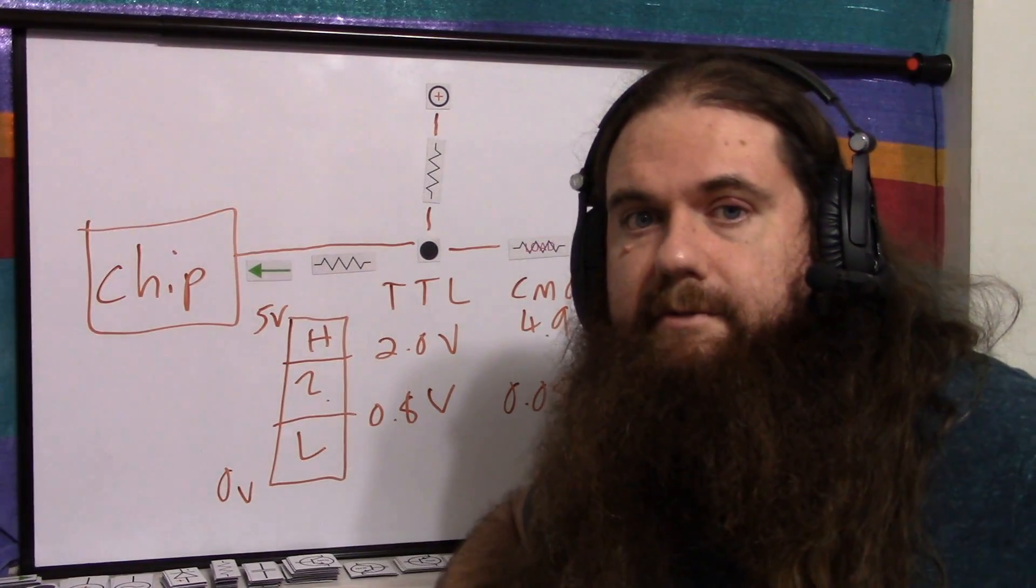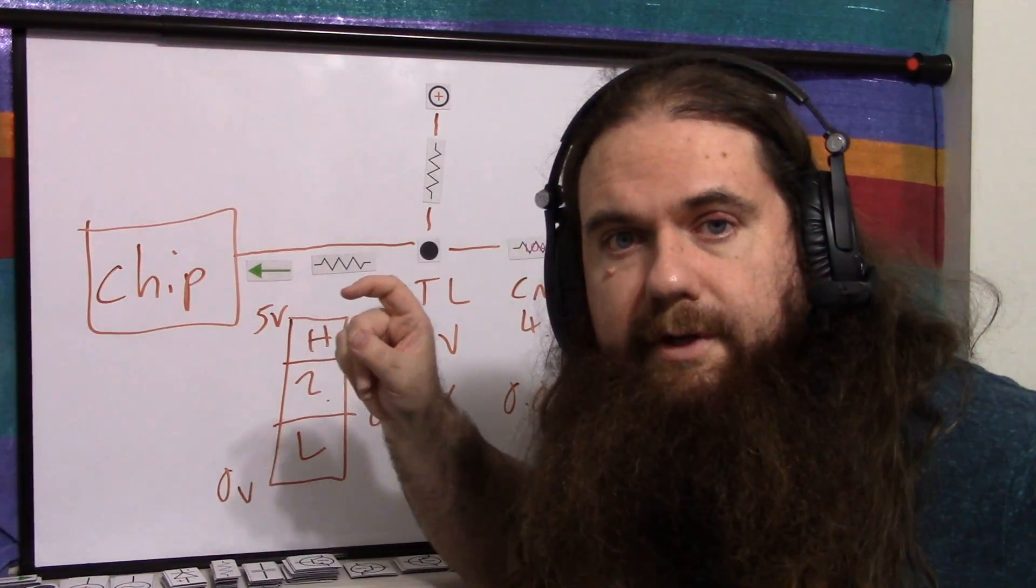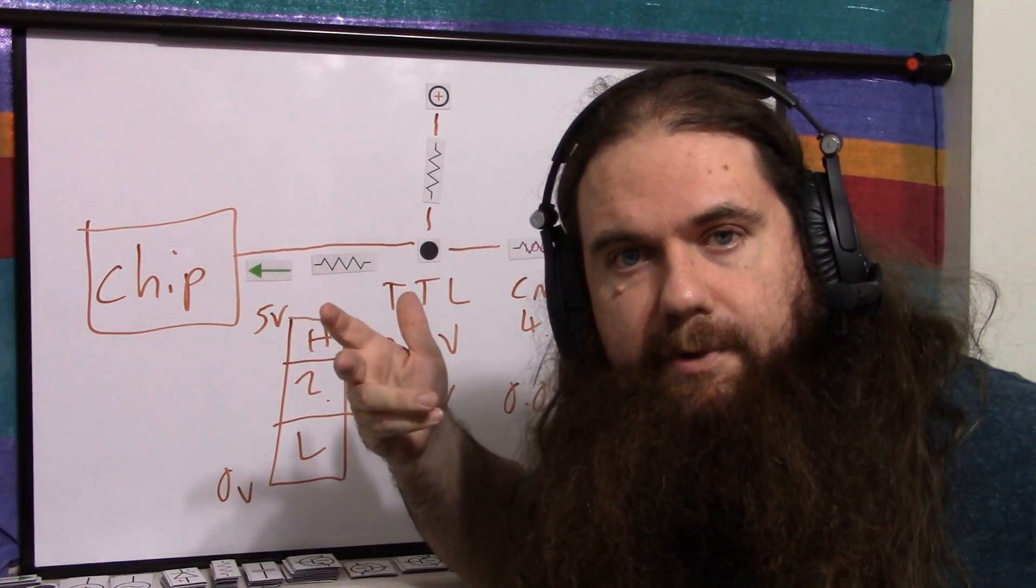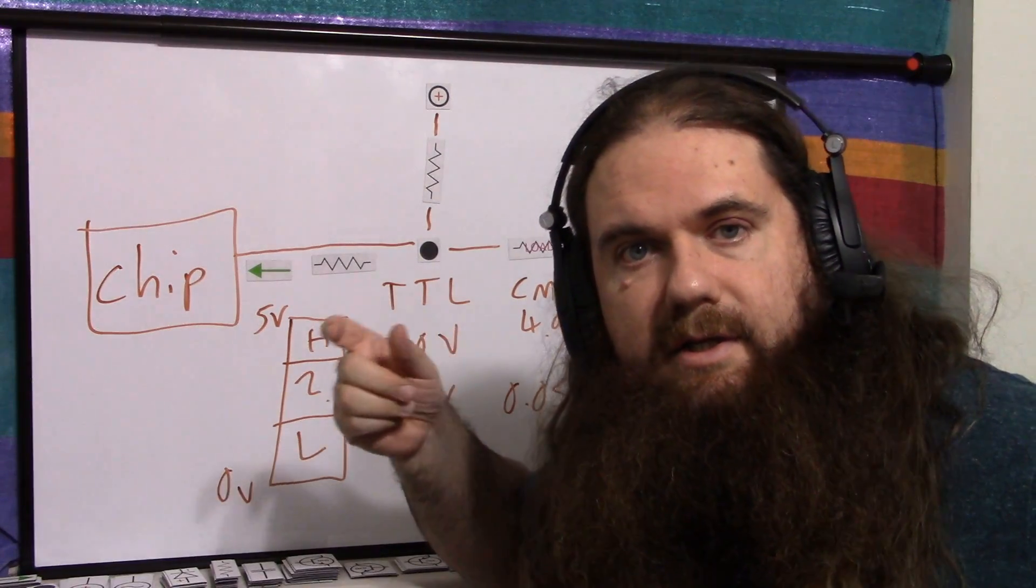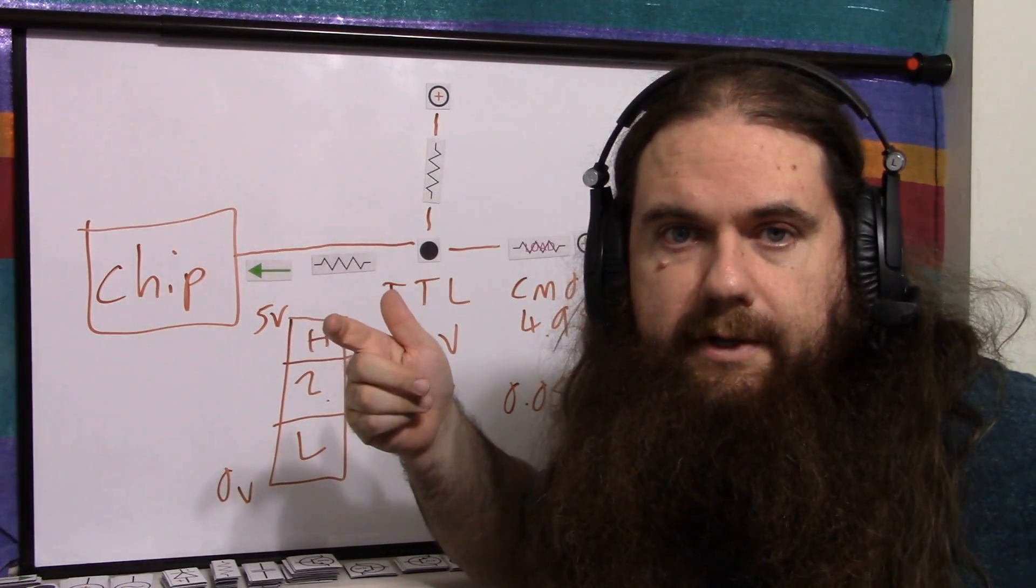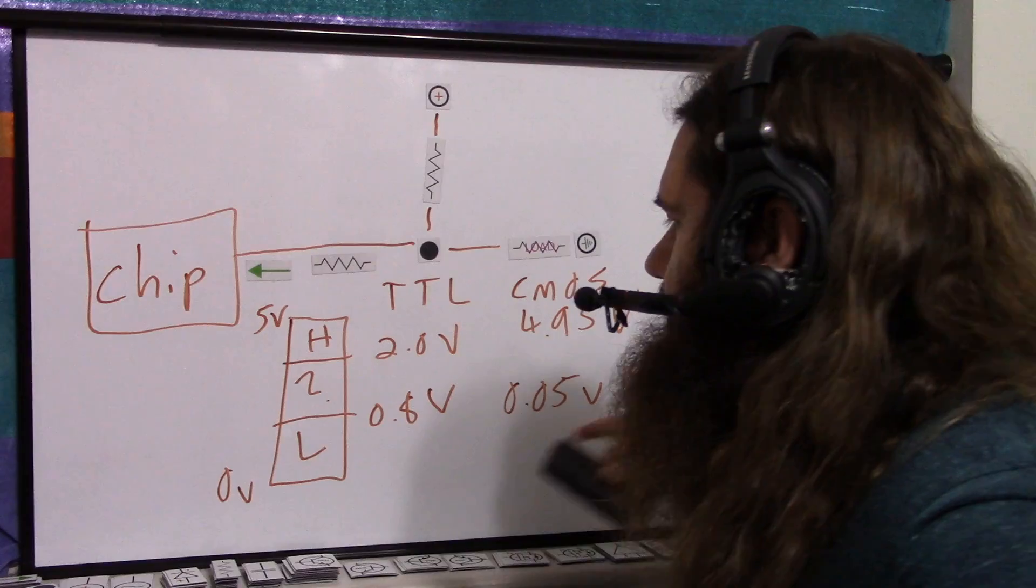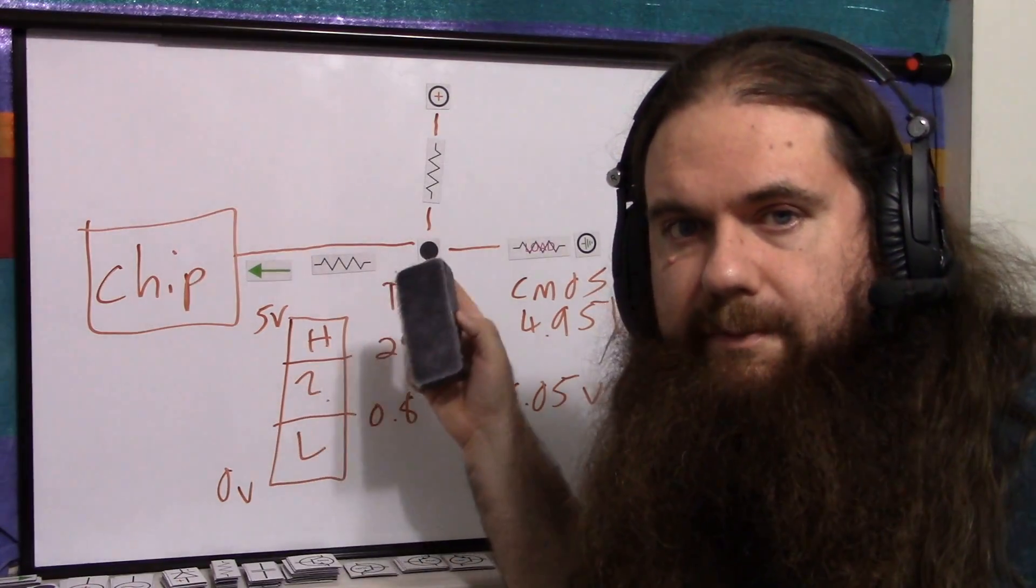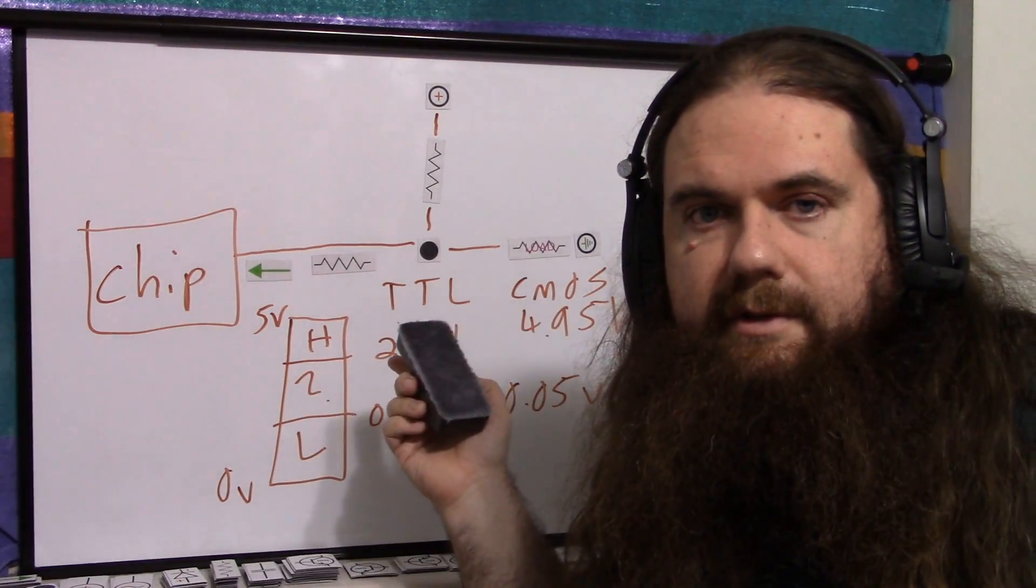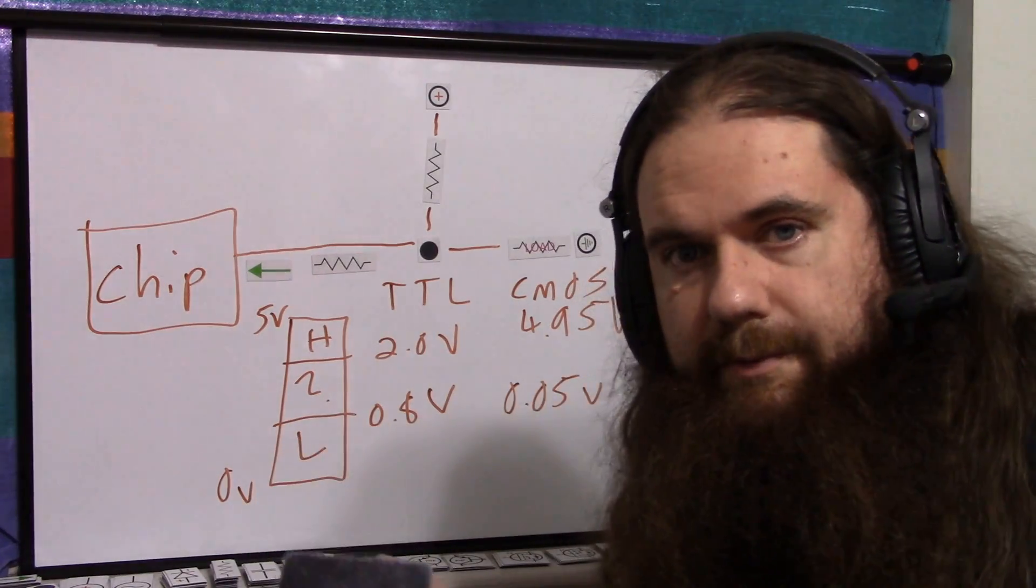But sometimes we want to bother. Sometimes we want to be sure. If for no other reason than we're doing a project where we need a nice, clean, 0 volt, 5 volt square wave. Or, I should say, want. So that's where this comes from, is from interfacing TTL to CMOS, which we generally don't have to do anymore, but we did back in the day. Or they did. I'm a Johnny-come-lately, you might say.